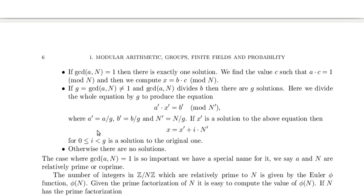Here we divide the whole equation by g to produce the equation a' times x' equals b' mod n', where a' is a divided by g, b' is b divided by g, and n' equals n divided by g.